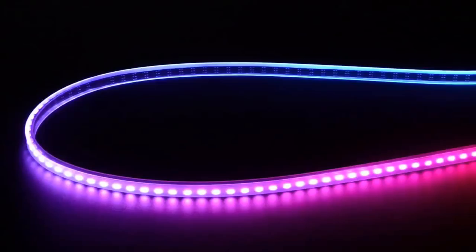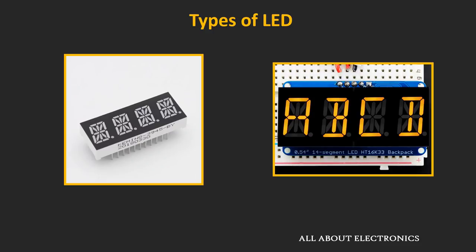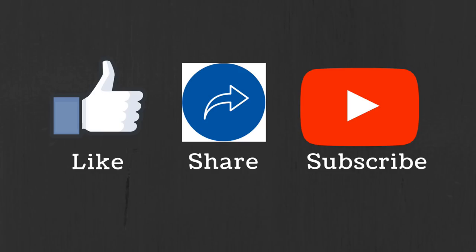And at the last, let's talk about the alphanumeric LEDs. These type of LEDs are used to display numbers and alphabets in various industries. So these are the different types of LEDs which are quite commonly used in today's world. I hope in this video you understood what is LED, how it works, and what are the different types of LEDs. If you have any question or suggestion, do let me know in the comment section below. If you like this video, hit the like button and subscribe to the channel for more such videos.